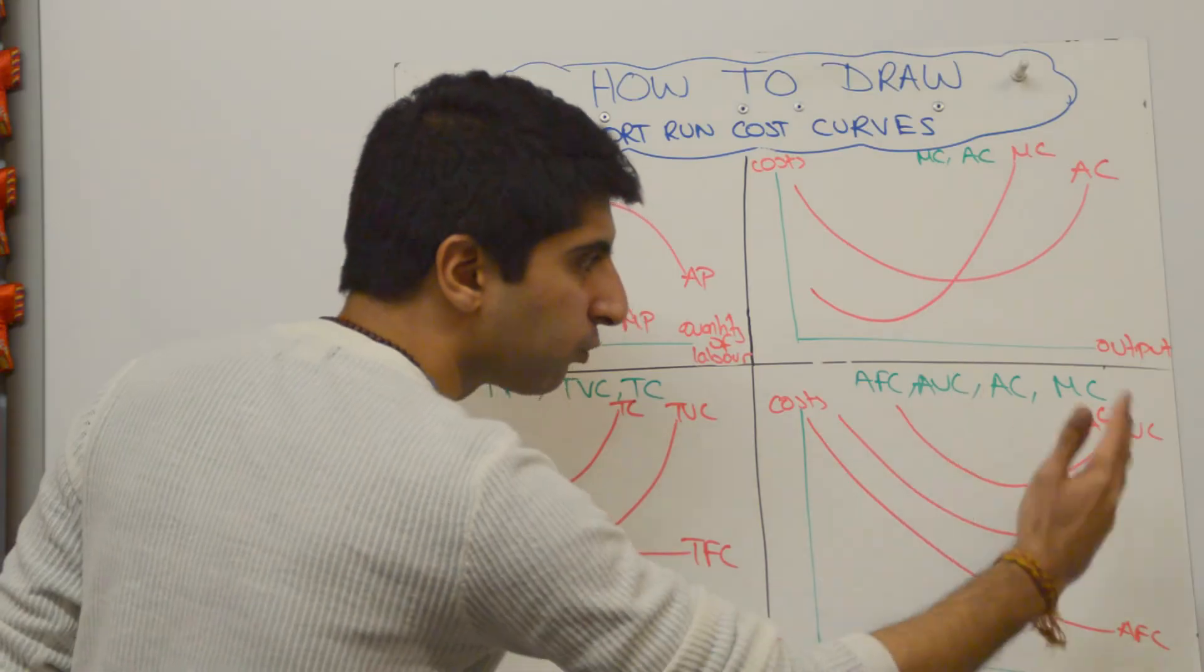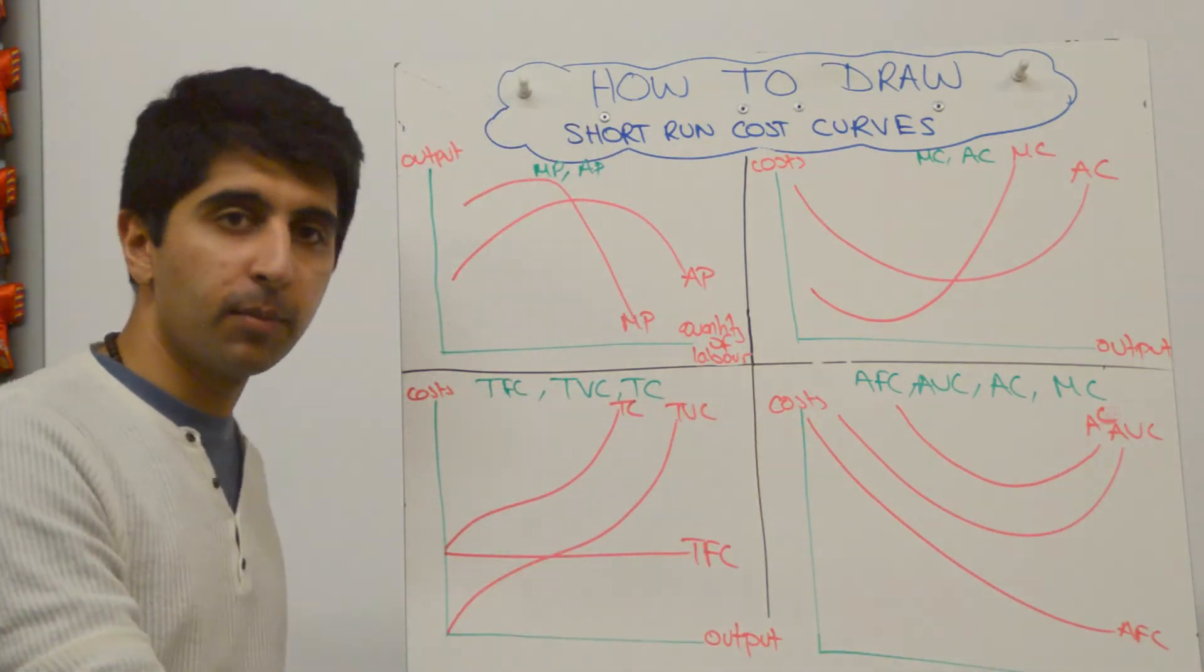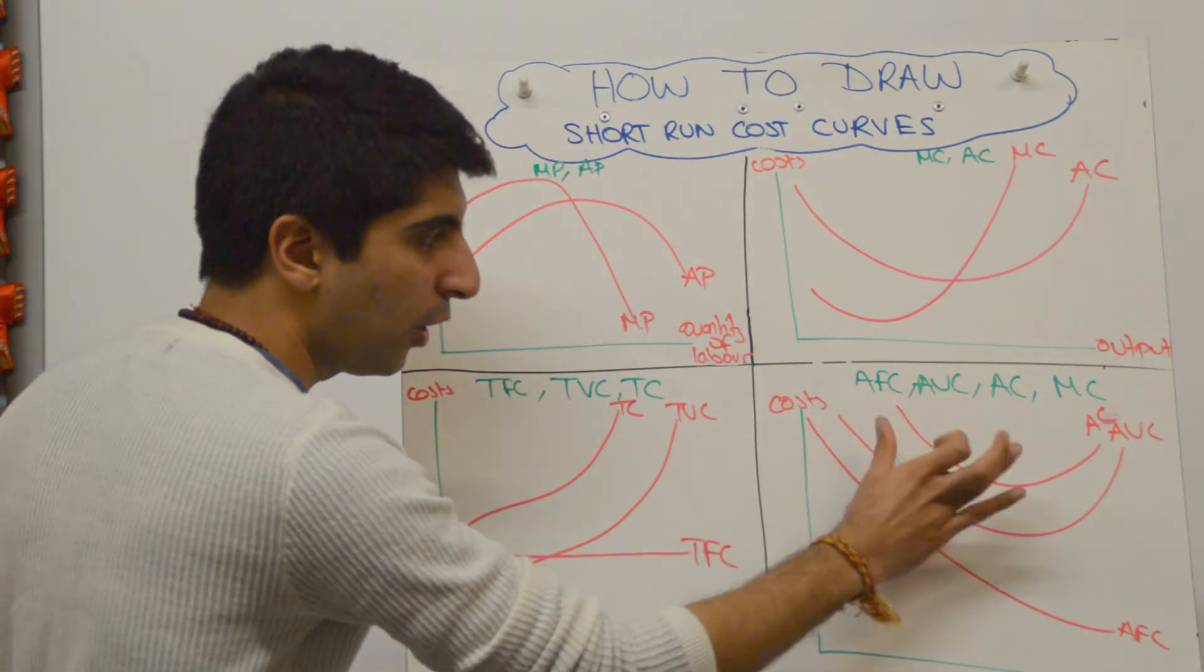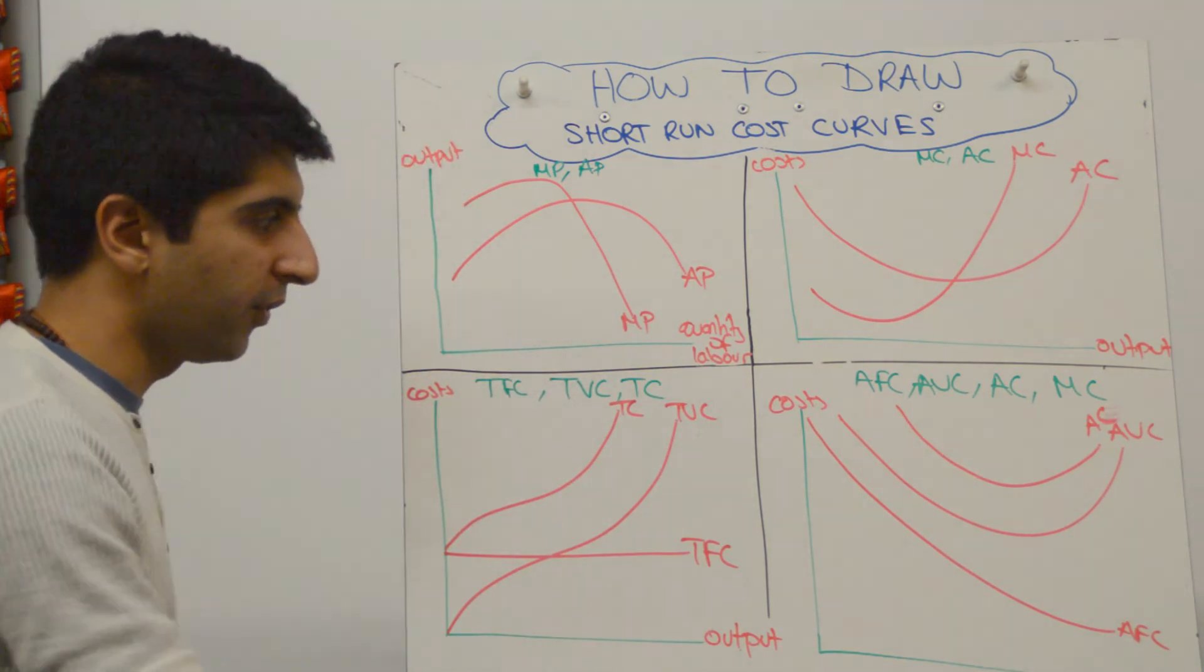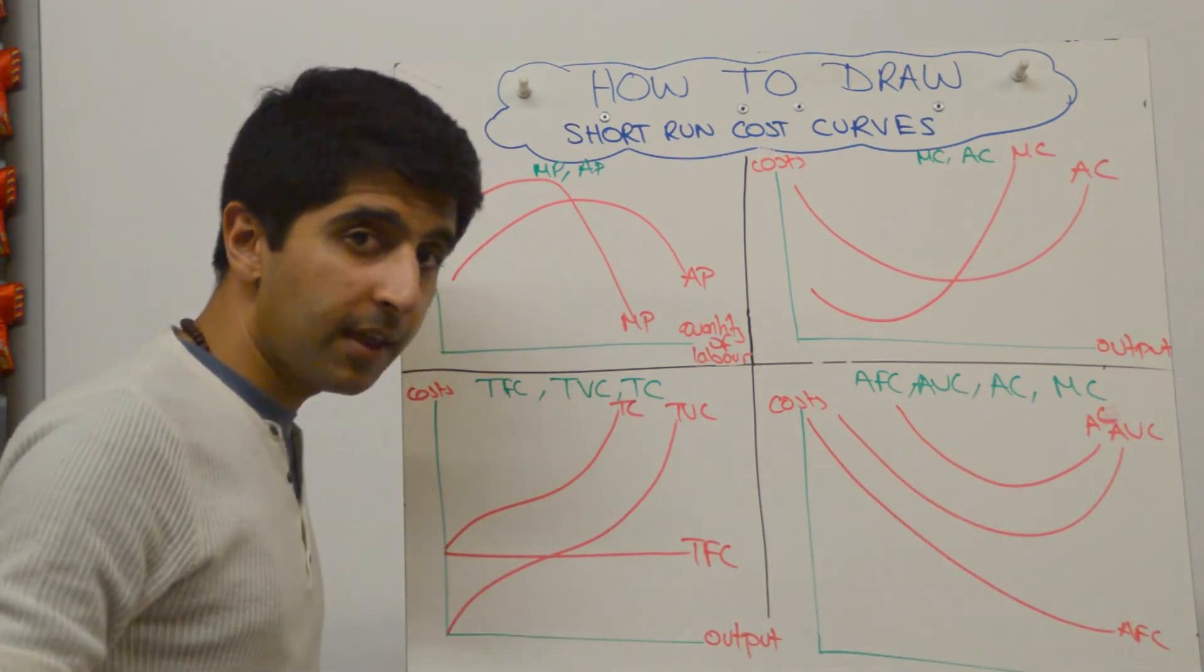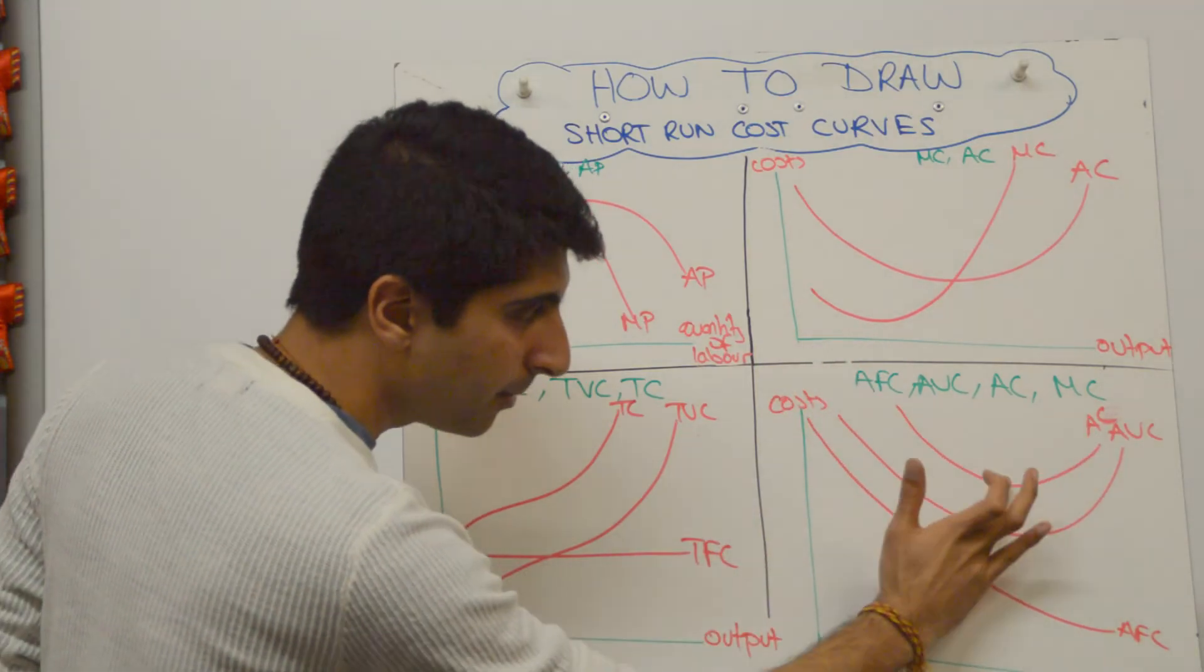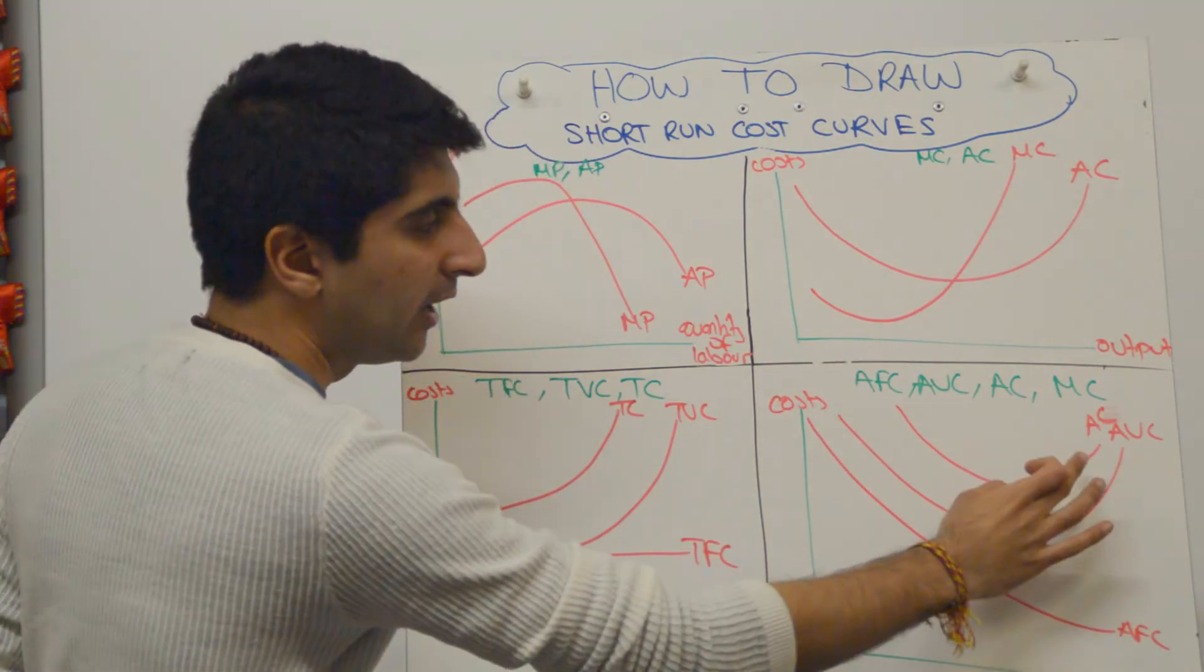And draw it slightly to the right of AVC. I've explained why in all my previous videos. Okay, that's the only little thing you need to be careful about in this diagram. When you draw AC, same shape as AVC, slightly to the right. So the minimum point should be slightly to the right, and it should kind of pull closer to the AVC curve.